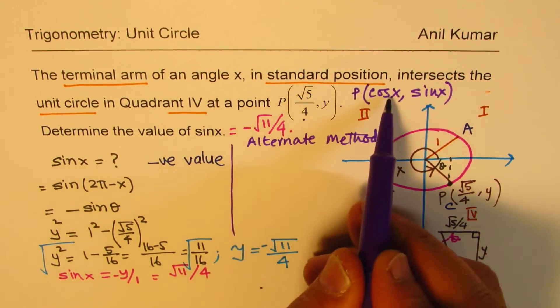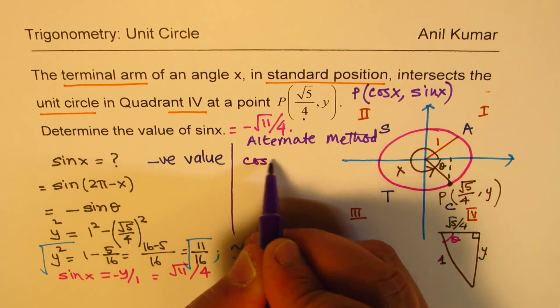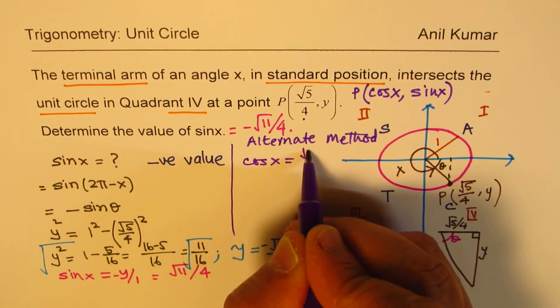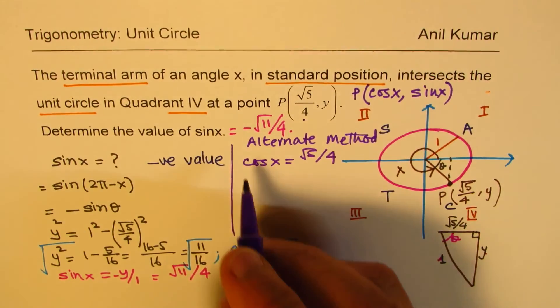Now, whenever you are given this quadrant in a unit circle, what will this be? Normally, it is basically equals to cos θ, in our case cos X, and sine X. Simple as that. So the value which you have here is cos X. So basically, we know what cos X is. Cos X is square root of 5 over 4. Now, what is sine X?